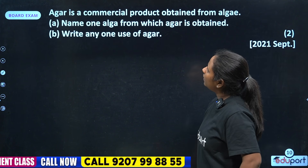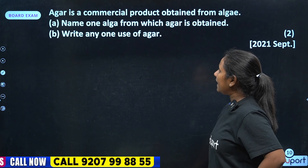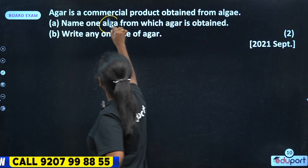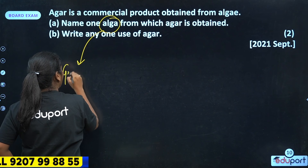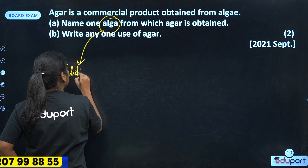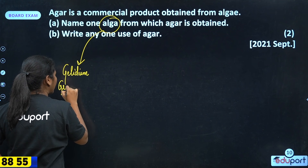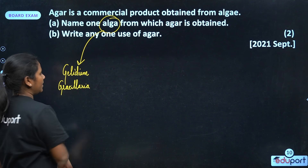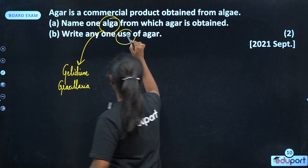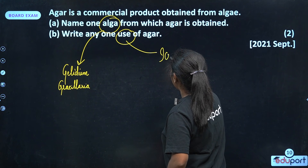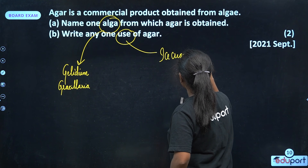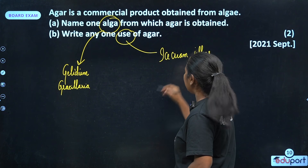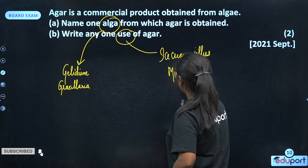Agar is a commercial product obtained from algae. Name one algae from which Agar is obtained. Two algae names: Gelidium and Gracilaria. Uses of Agar: we use it in ice cream and jellies, and to grow microbes.